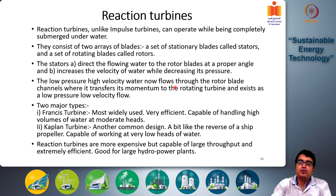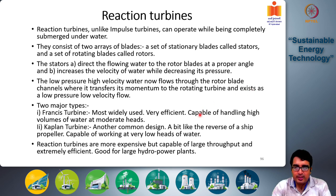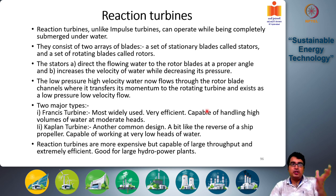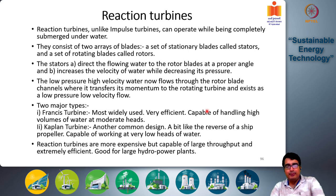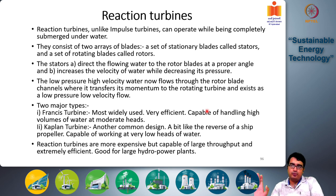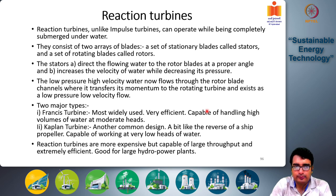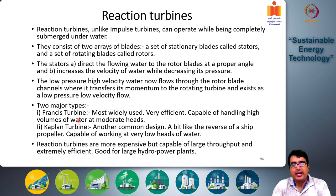The water exits at a low-pressure, low-velocity flow. So the low-pressure, high-velocity flow coming out of the stator blades hits the rotor blades, momentum is transferred, and you get a low-pressure, low-velocity flow at the output while the blades rotate, running the turbine shaft and creating power output. There are two major types of reaction turbines: one is called the Francis turbine.